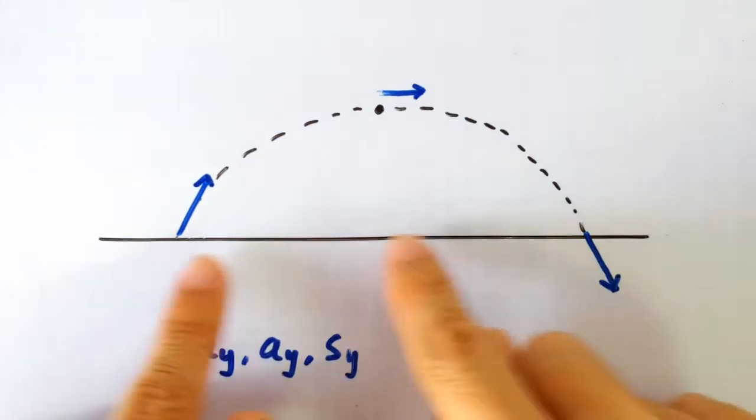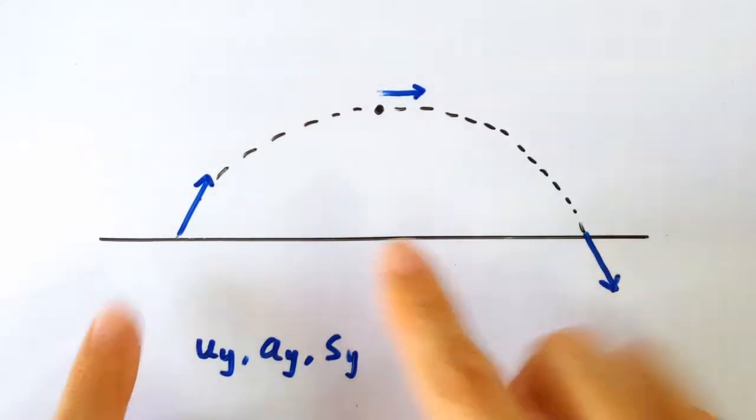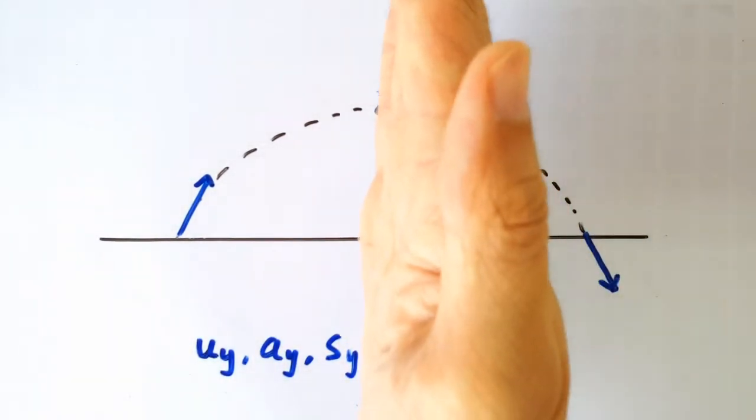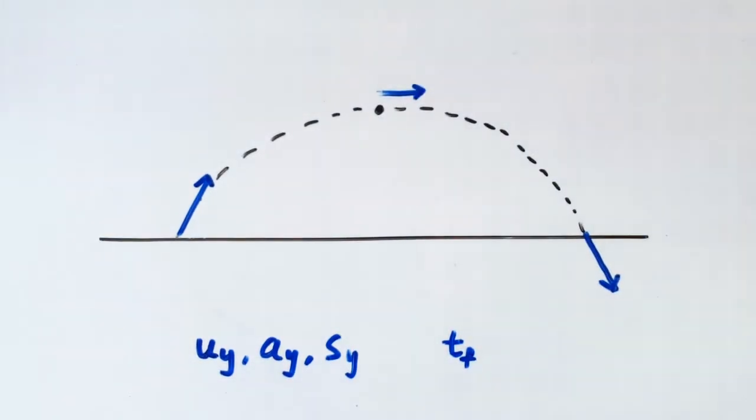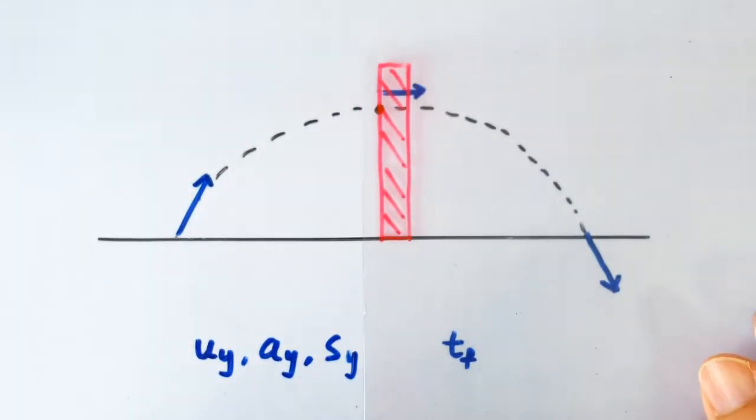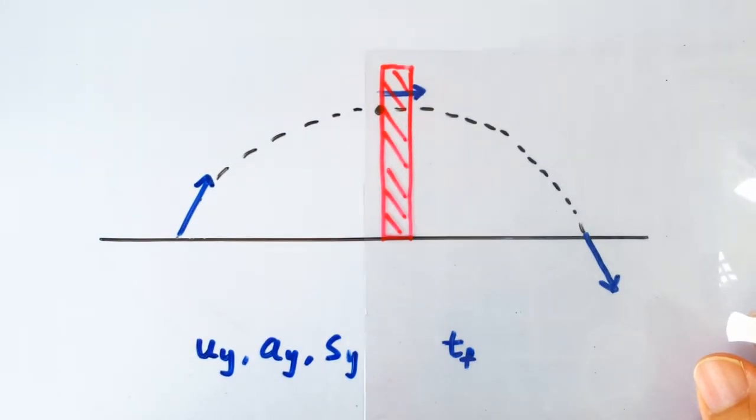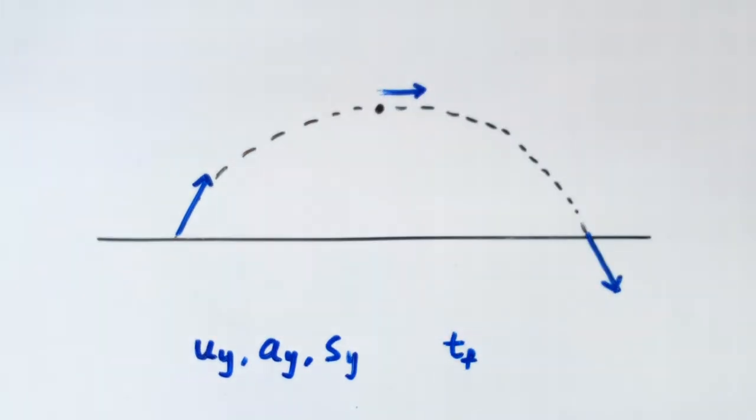these two distances here are exactly the same, so everything is symmetrical about the peak. Now let's bring in the wall. We know that the wall caught the projectile when it's at the peak because when